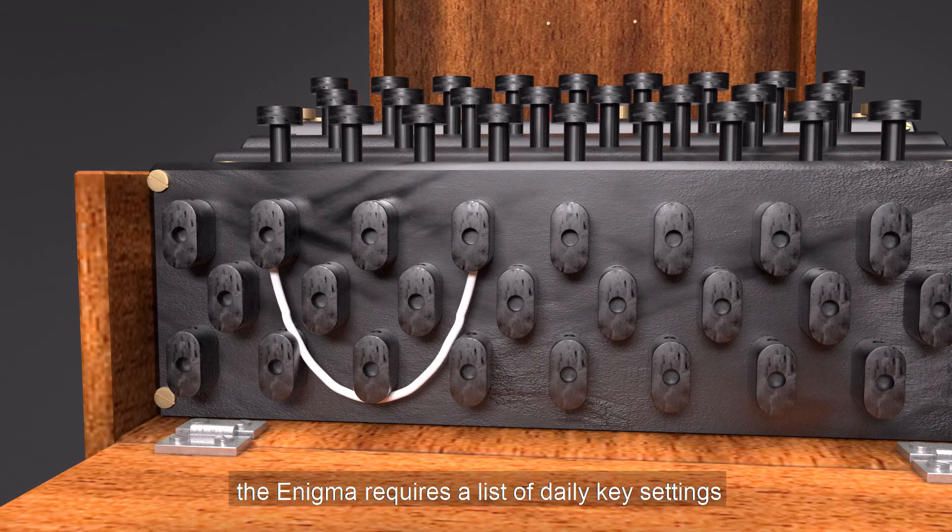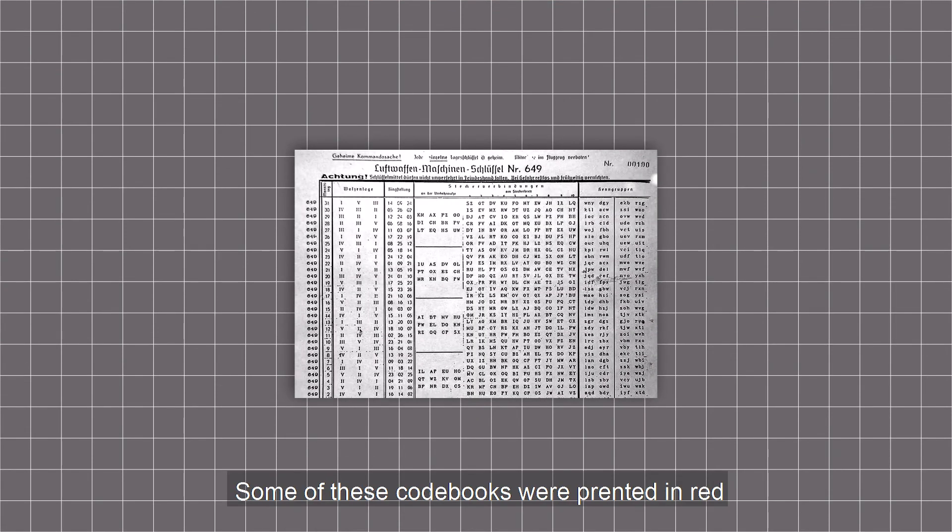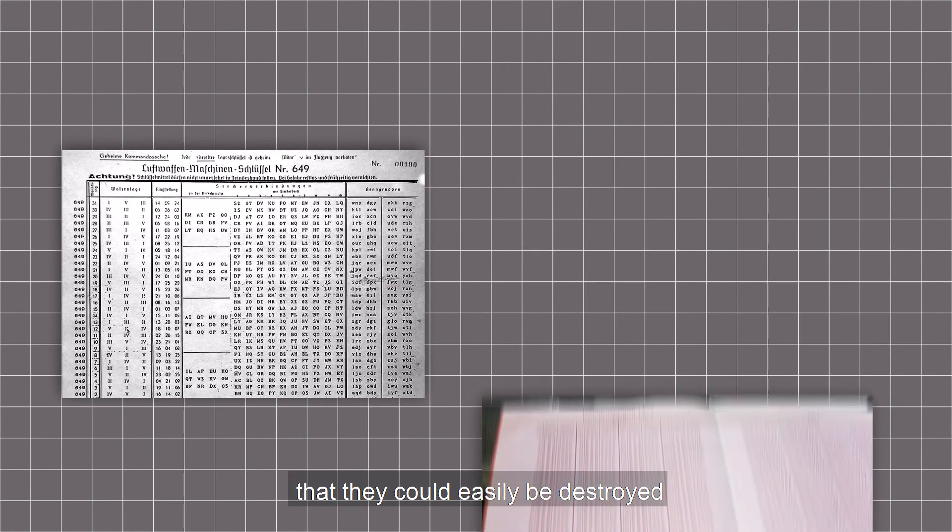In use, the Enigma requires a list of daily key settings. Each operator was given a settings list for its Enigma, valid for a period of time. Some of these codebooks were printed in red, water-soluble ink on pink paper so that they could easily be destroyed.